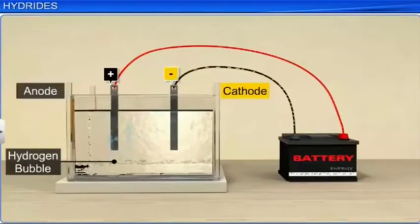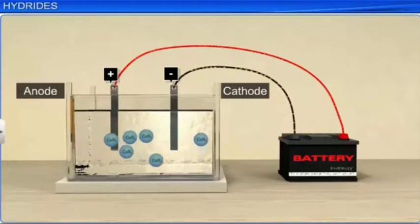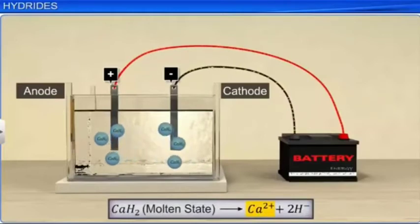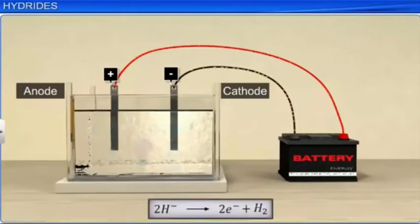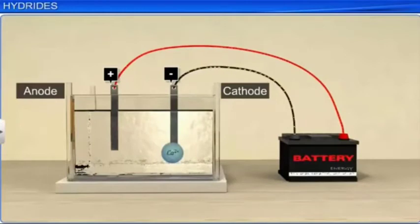Let's study this using calcium hydride as an example. On passing current through molten calcium hydride, the compound dissociates into calcium 2 plus ion and hydride ion. At the anode, each of the two hydride ions combine to liberate dihydrogen gas and two electrons. This is an oxidation reaction. At the cathode, each calcium 2 plus ion accepts two electrons to give calcium. This is a reduction reaction.